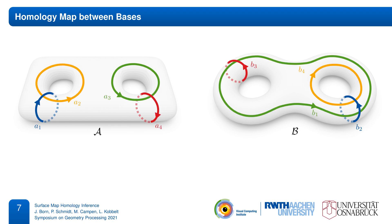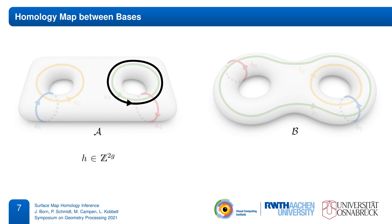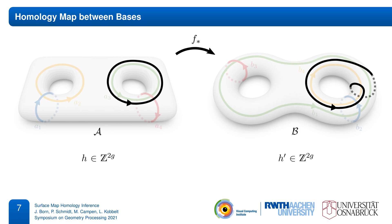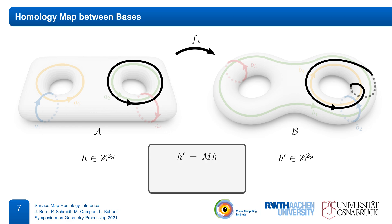For both surfaces, we can choose homology bases, allowing us to represent homology classes using coefficients. Then the homology map can be expressed as a map between those two coefficient representations. Each integer vector encodes some homology class on A, which gets mapped over to B, where it is expressed by some other vector. As it turns out, this induced mapping is linear, so it can be represented by just an integer matrix M that maps between the coefficients.